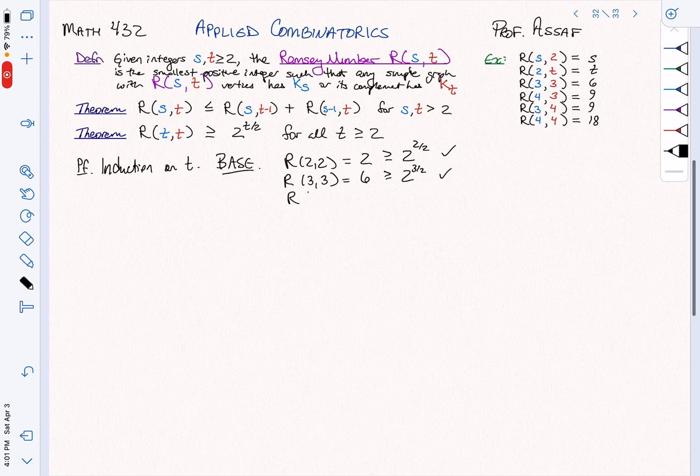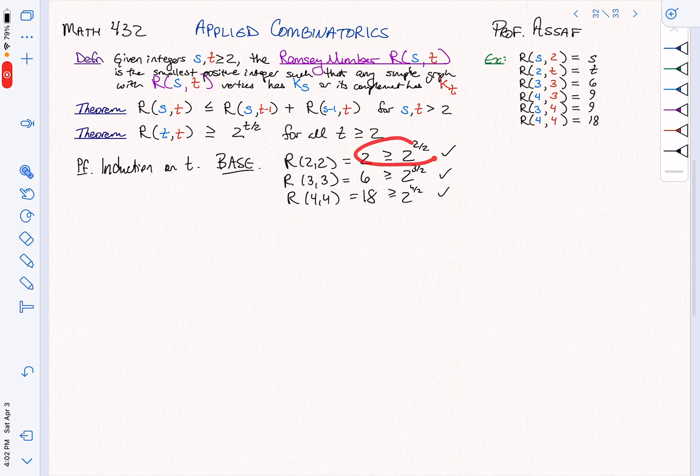And we can even do R(4,4). This is equal to 18, which is a whole lot bigger than 2 squared. So we can see here that the bound was tight in this case. It was exactly right. And here it's definitely way off. We don't know how well this bound does. There are other bounds we can prove, but at least it gives us something.